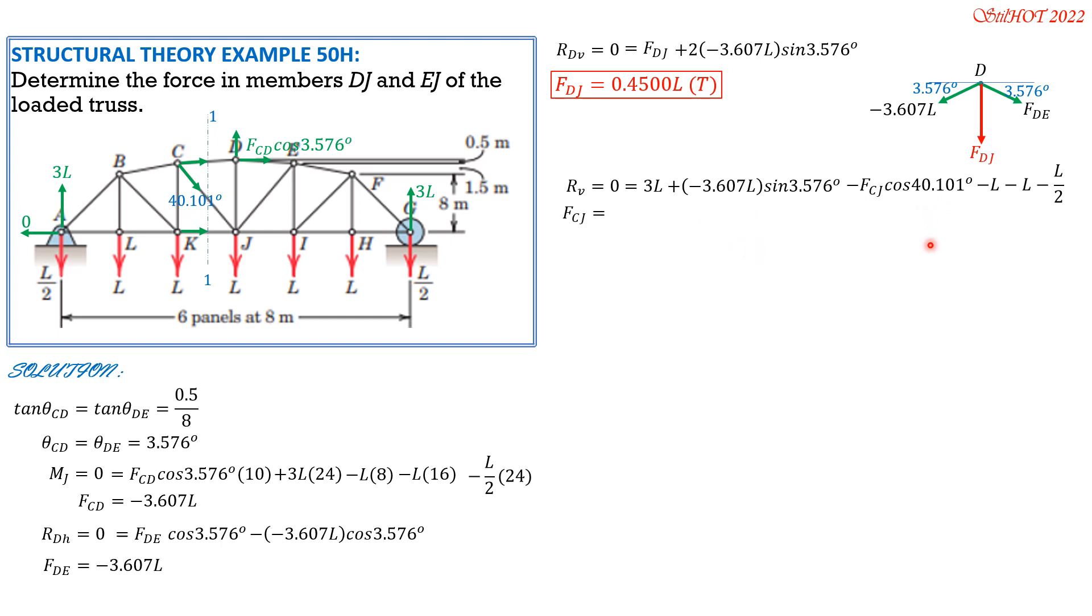So therefore, because FCJ is equal to FEJ, then FEJ is also 0.3595L tension. And that's it.